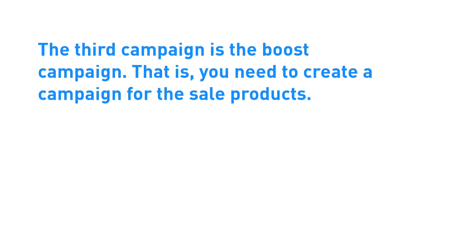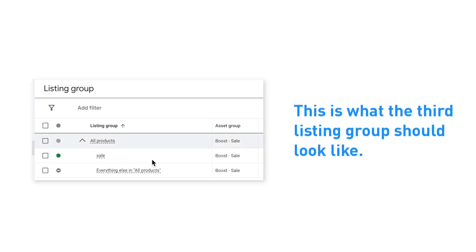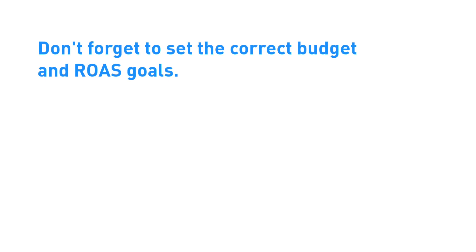The third campaign is going to be the boost campaign. Create a campaign for the sale products. The listing group for this campaign will look like this. Don't forget to set the correct budgets and ROAS goals. In this example, we are going for this structure.